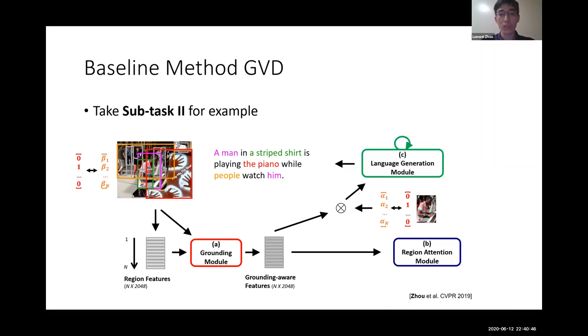The loss function consists of four parts. The first one is the standard language reconstruction loss. The second one is on the attention weights, and similarly, we have that for the grounding weights.